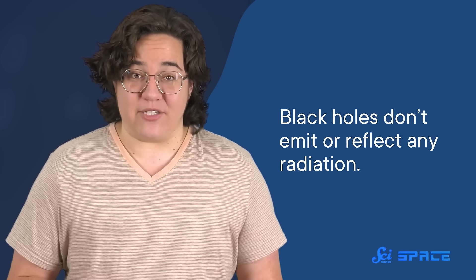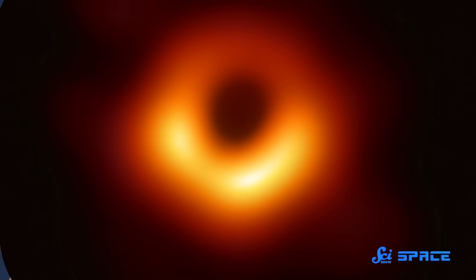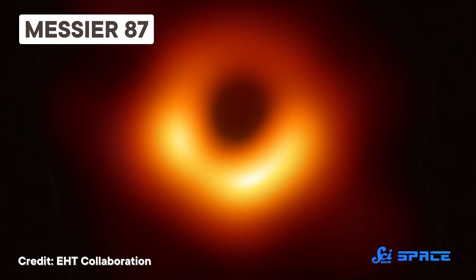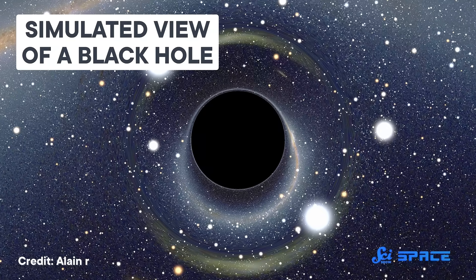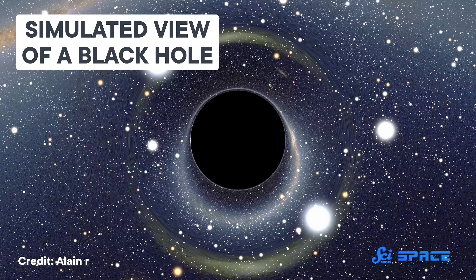Black holes don't emit or reflect any radiation. So it wasn't until 1964 that astronomers first detected one indirectly, based on its gravitational influence on another star. Since then, scientists have indirectly observed many black holes. Some are just a few times the mass of our Sun, while others are many billions of times more massive.